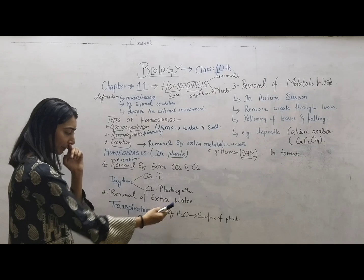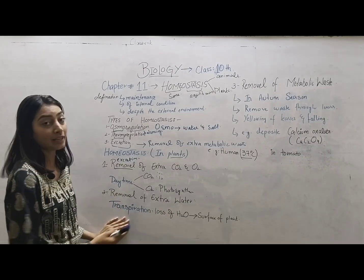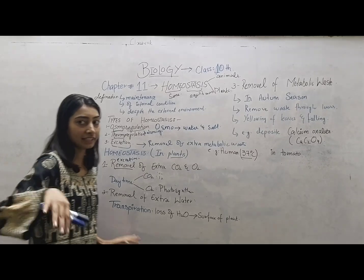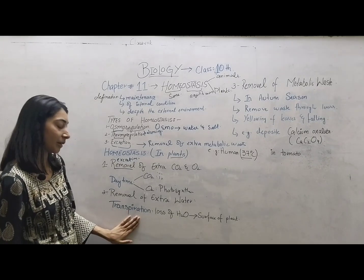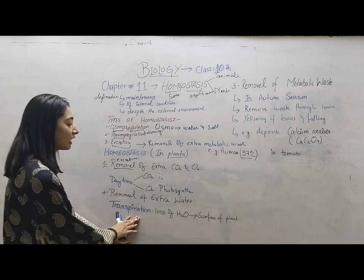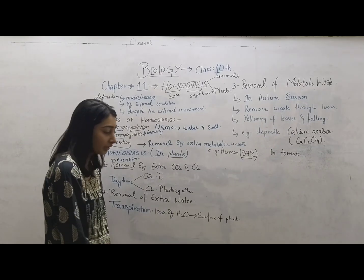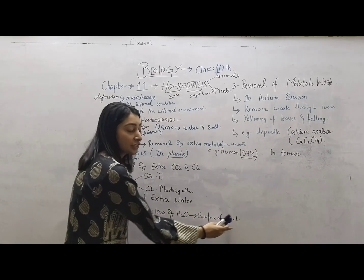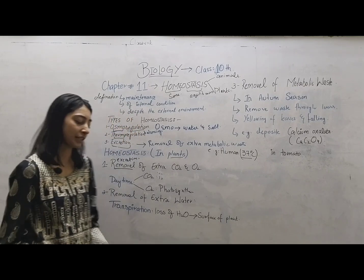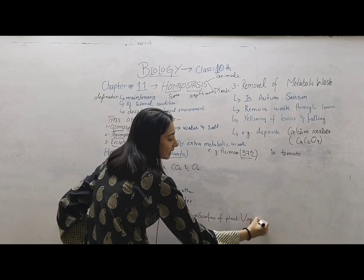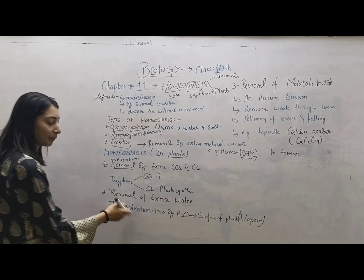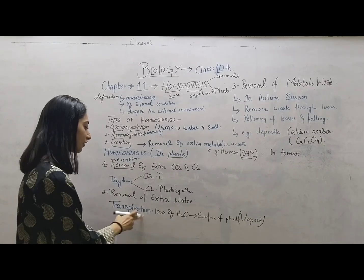The removal of extra water in plants occurs through stomata. As I told you, stomata are most important in plants. The process is called transpiration. Transpiration is the loss of water through the surface of plants in the form of vapors. Water removal from leaves through evaporation is called transpiration.